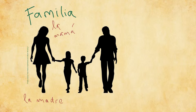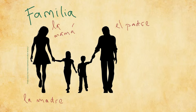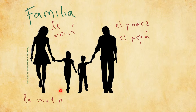And there's a similar thing for father. In Spanish it's 'el padre'. But a nicer way to call your father would be 'dad', which in Spanish is 'el papá'. So: 'la mamá', 'el papá'. And now we have the siblings. The sister is 'la hermana'.